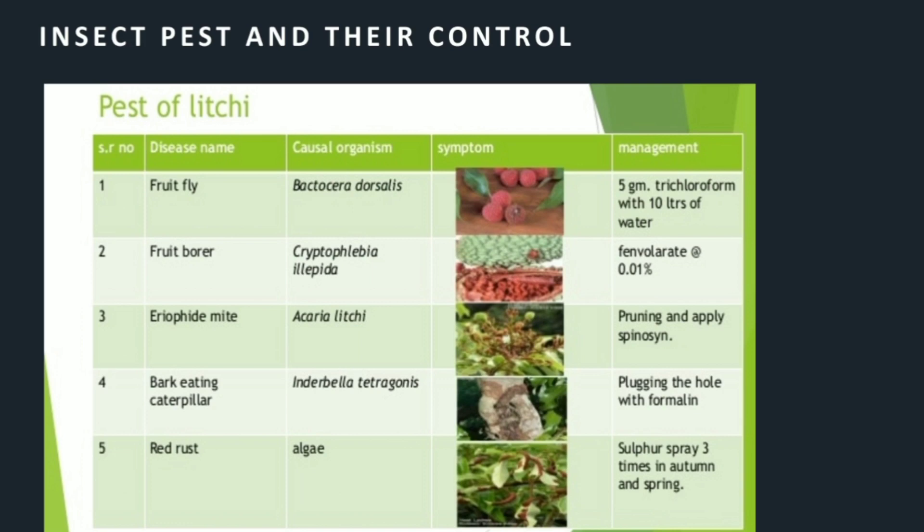Fourth, bark eating caterpillar — causal organism: Indarbela tetraonis; management: plug the hole with formalin. Fifth, red rust — causal organism is algae; management: sulphur spray three times in autumn and spring.